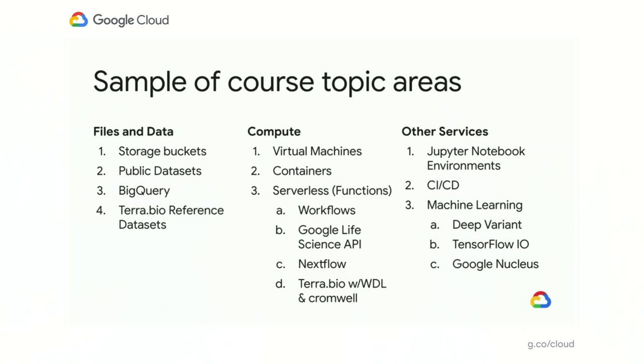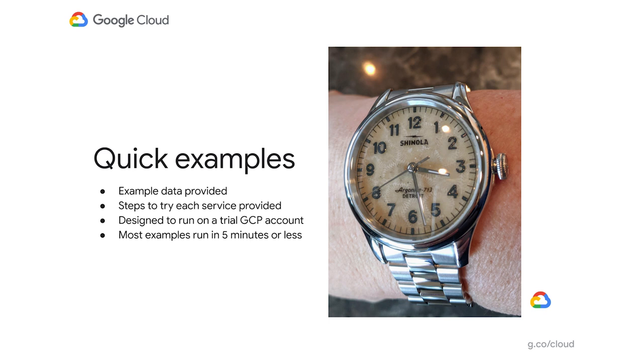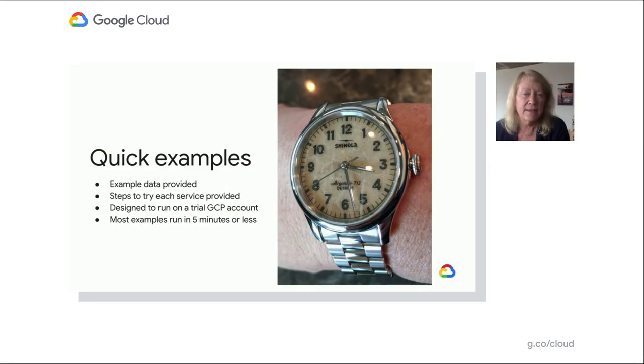Another aspect of the course design is that my examples are designed to be quick. One of the challenges I found when learning genomics tools as a cloud architect is that many examples reflected real world — and real world can be huge amounts of data, so a hello world can take minutes, hours, or even days to run. So I provide example data and specific steps to try out each service. My course is designed to run on a trial Google Cloud Platform account. If you run with my example data sets, it should be at nearly no cost — I never pay more than a dollar or two — and most examples run in five minutes or less.